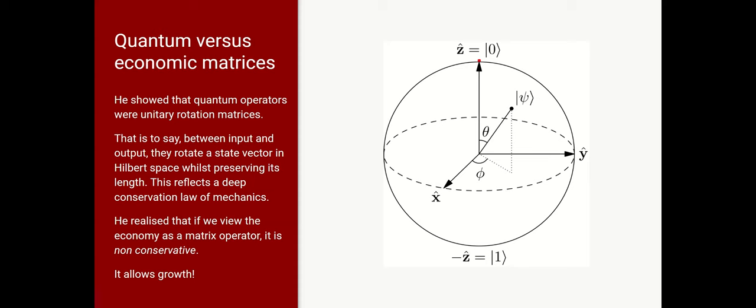Now, what's the connection between these things? In his work on quantum theory, he showed that quantum operators can be represented by matrices and specifically by unitary rotation matrices. That is to say, between input and output, they rotate a state vector in the abstract vector space of Hilbert space whilst preserving its length. Now this reflects a deep property of mechanics and it's conservative. It's conserving length of the vector in this case. And he realized that if we look at the economy as a matrix operator, then it's a non-conservative operator. It allows growth.